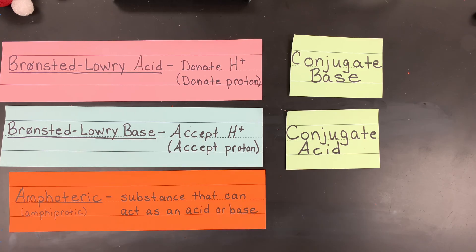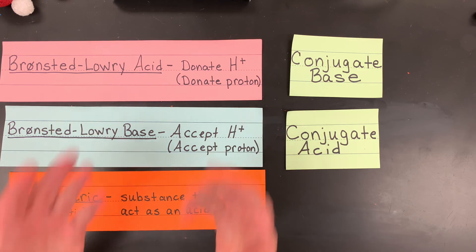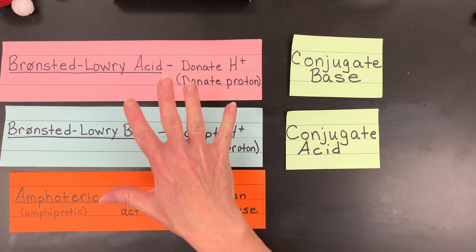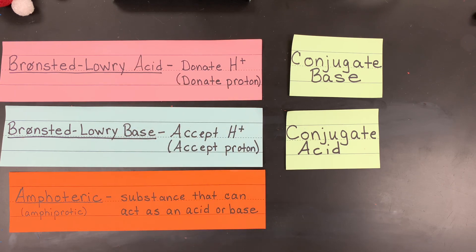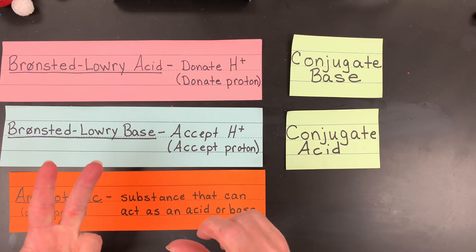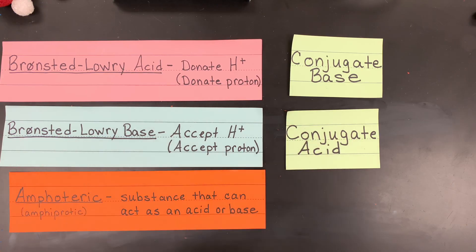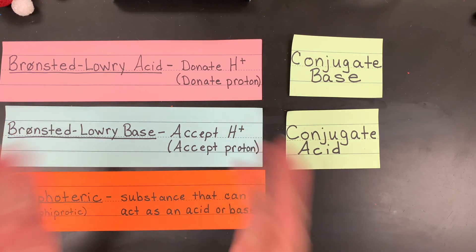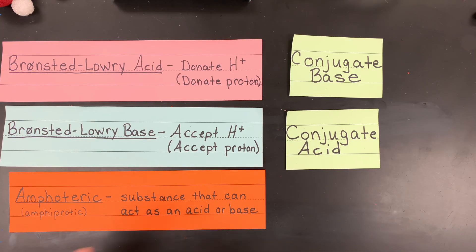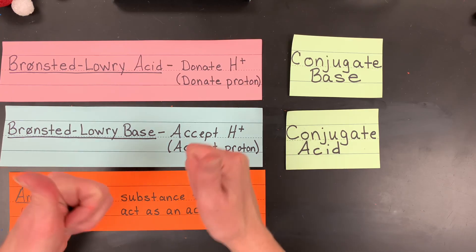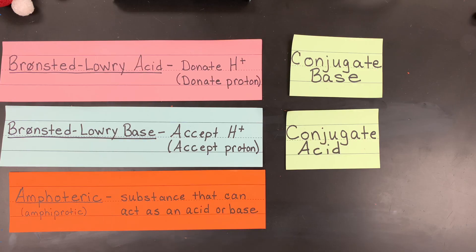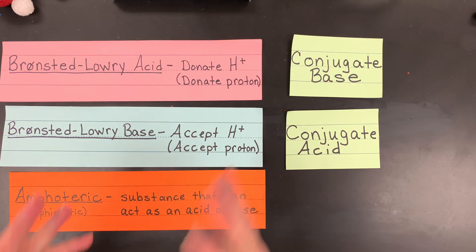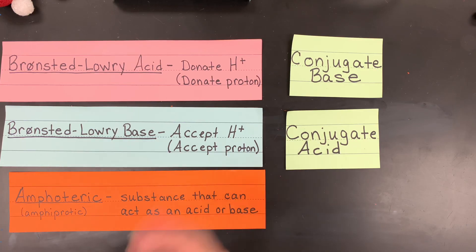I hope this video helped you understand how to label your conjugate acid-base pairs — I went through five examples. If you need other help on acids and bases, pH calculations, or deciding if something is a strong or weak acid or base, I've got those videos out there for you, as well as chemical equilibrium. Good luck, chemists — make a comment, like, and subscribe!